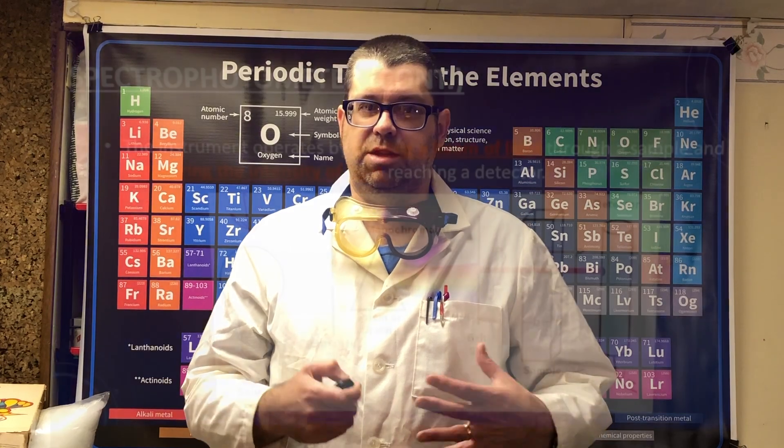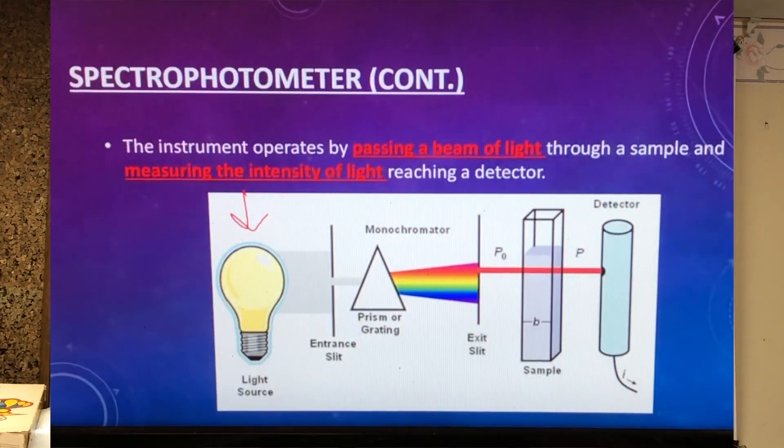What they found is that if you take a colored solution, like at your home you have Kool-Aid or Windex window cleaner that has a bluish or reddish tint or color, if you change the concentration of the particles that give it the color, it'll change the lightness or the darkness of the solution.